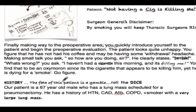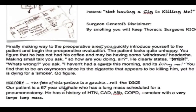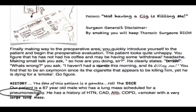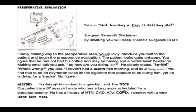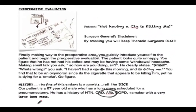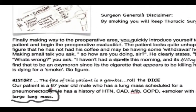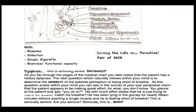Our patient is a 69-year-old male scheduled for a pneumonectomy, with a history of hypertension, CAD, atrial fibrillation, obstructive pulmonary disease, and chronic smoking with a very large lung mass.